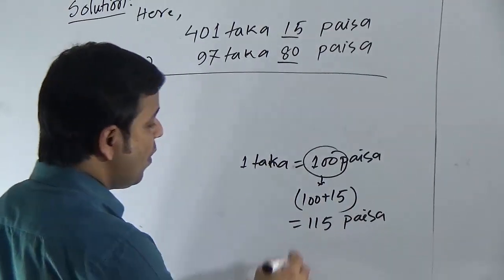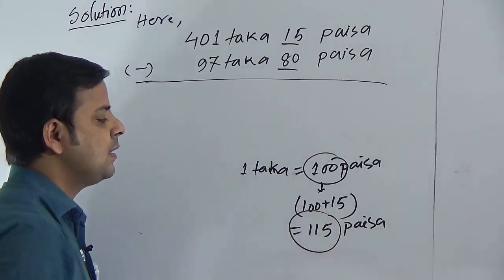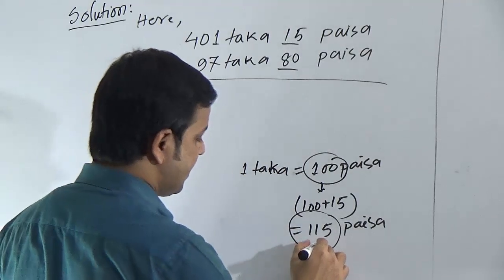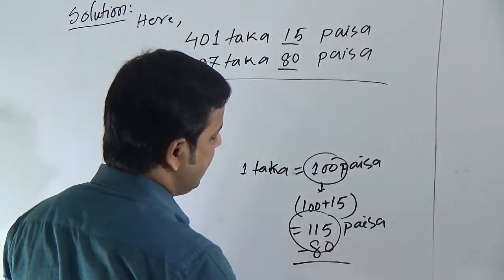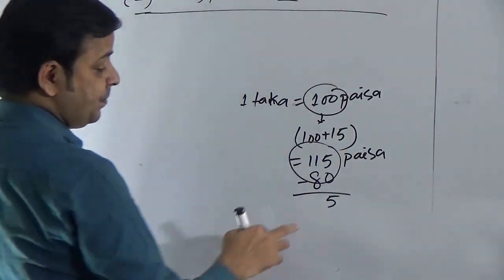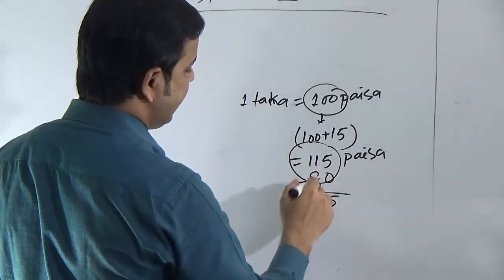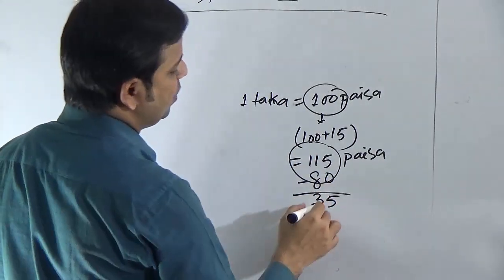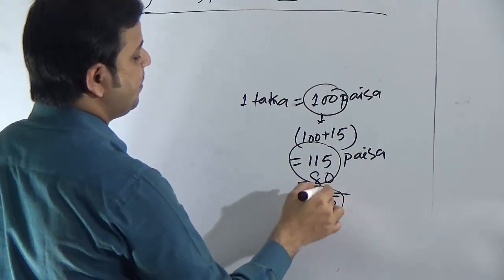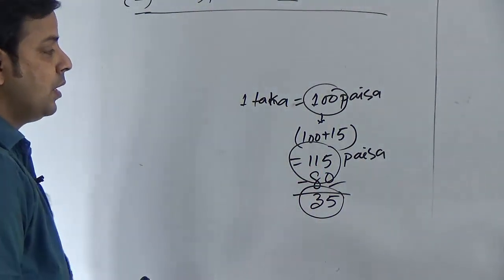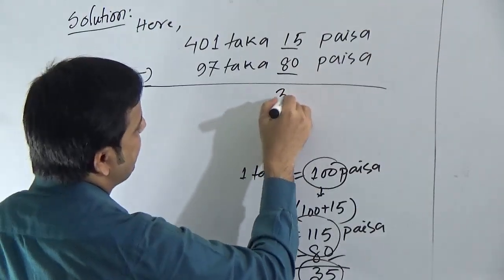Now 115 is greater than 80, so we can subtract. Subtract 0 from 5, it will be 5. Now subtract 8 from 11, this will be 3. So if we subtract 80 paisa from 115 paisa, we will get 35 paisa.